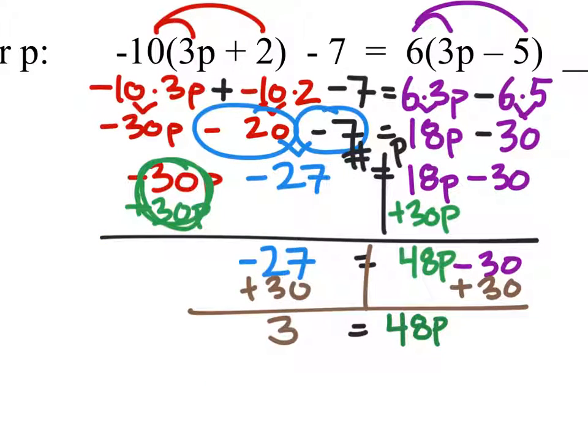Now what we need to do is get rid of that 48p's by dividing that by 48. What this does is it gives us a coefficient of p that is 1. But if I do it to one side I must also do it to the other side as well.